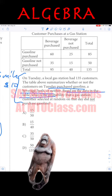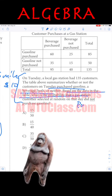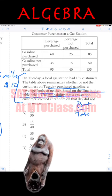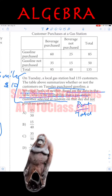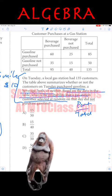Both. Based on the data in the table, what's the probability—that's always part over total. What's the probability that a gas station customer selected at random on that day did not purchase gasoline?